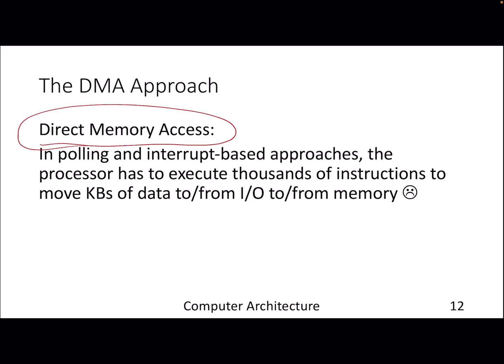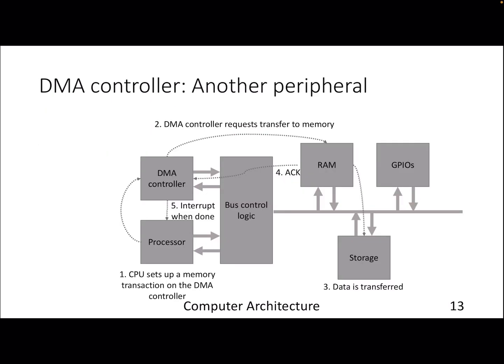Modern systems use an approach called Direct Memory Access, or DMA, where the processor need not be active throughout the IO transfer. In polling-based or programmable interrupt-based approaches, the processor still has to execute thousands of instructions to move even kilobytes of data to or from memory, during which the user program cannot proceed. The better approach is a DMA controller.